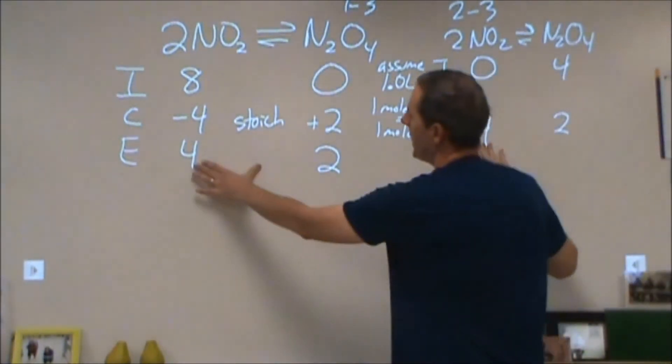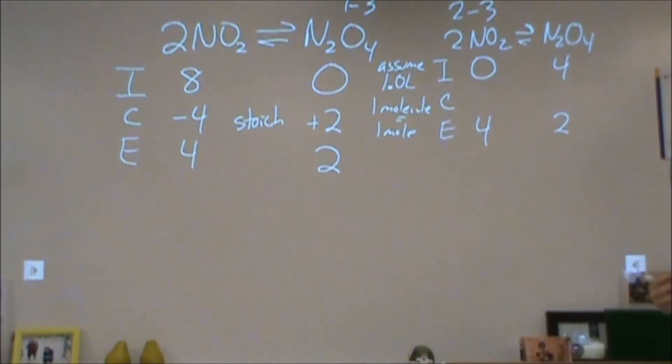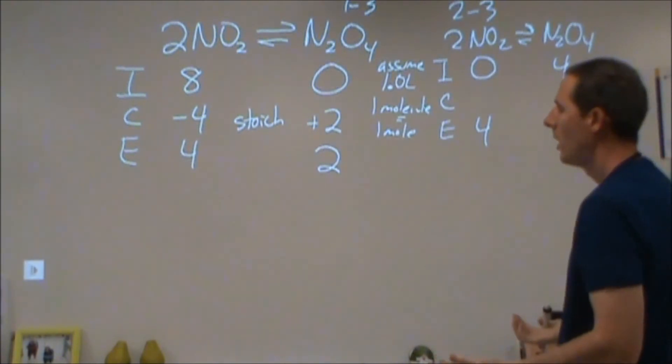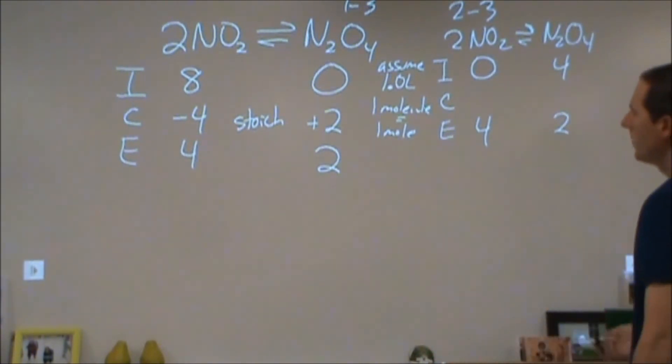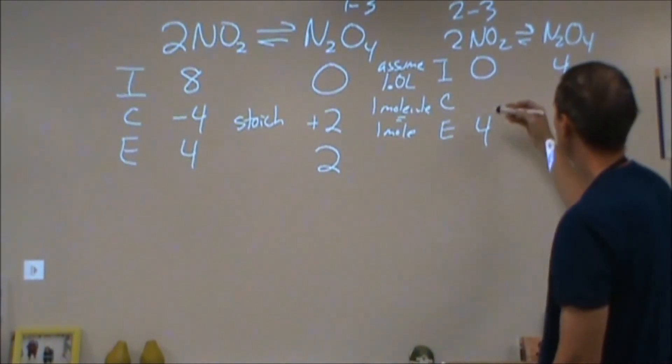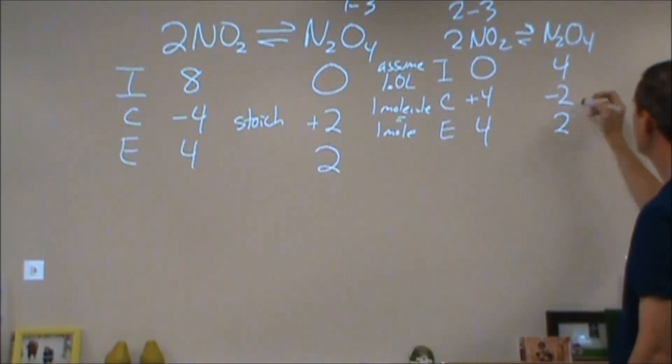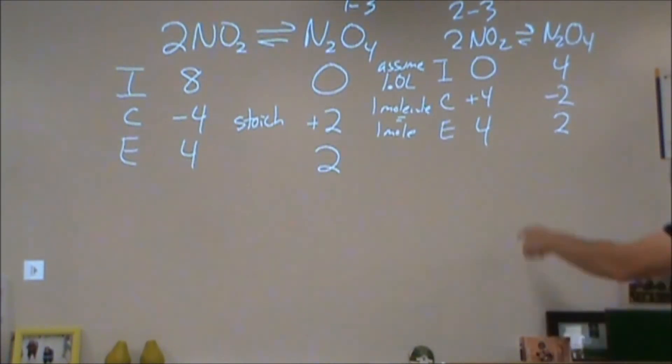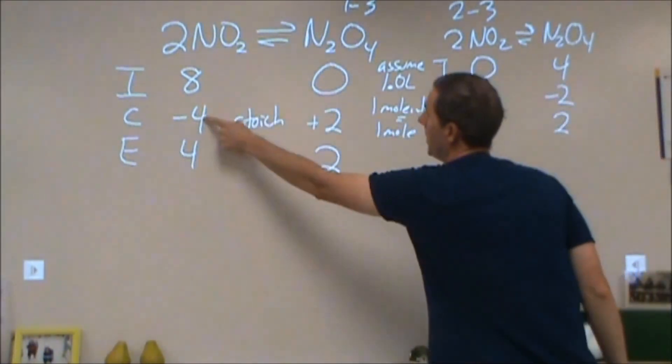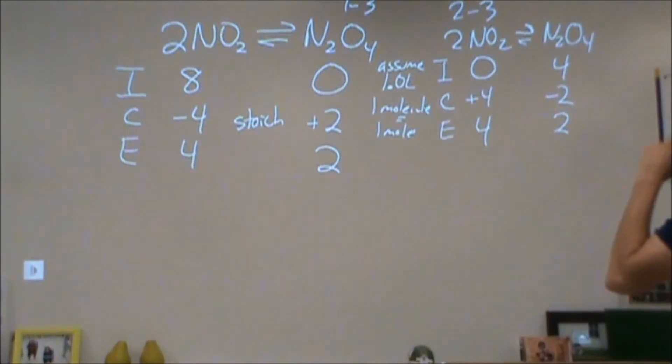Notice that in each case, we end up with the same equilibrium amounts. Because we have the same number of things present, we'll end up with the same ratios. We end up with the exact same representation at equilibrium. This changed by four and this decreased by two. Again, you can see the proportionality of twice as much reactant change as product change based on this balanced reaction.